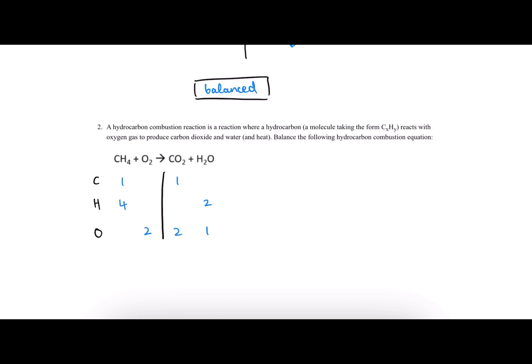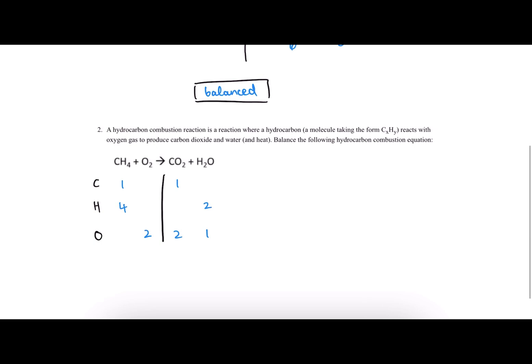Okay, so first we can see that this is not balanced. If we want to check, we can just check across: one equals one, but four is not equal to two and two is not equal to three. So we know we have to fix something. The way we balance chemical equations is by adding coefficients. By using this table method, whenever you add a coefficient to one molecule, you have to make sure to multiply the entire column.